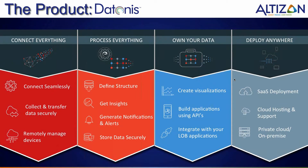Let me introduce the product from Altizon — it's called Datonis H. This product is a historian platform to which you could connect everything. You could connect any sensor on the production line, be it a discrete manufacturing line, a process industry line, a continuous industry line, any petrochemical plant, oil and gas plant, or auto component making plant. The data is collected and transferred in a secured fashion to the platform on a server. With this, you could also remotely manage your devices — for example, remotely turn off a machine given the right protocols used.